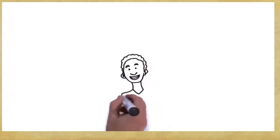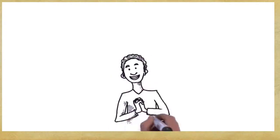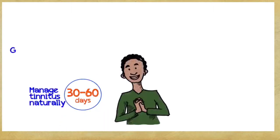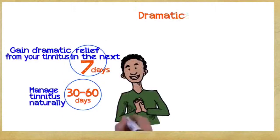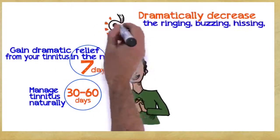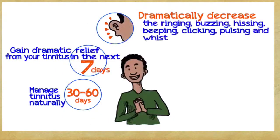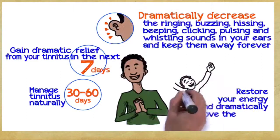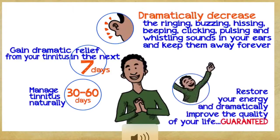So what can you gain if you embrace these three easy principles? You can manage tinnitus naturally within 30 to 60 days. Gain dramatic relief from your tinnitus within the next seven days. Dramatically decrease the ringing, buzzing, hissing, beeping, clicking, pulsing, and whistling sounds in your ears and keep them away forever. Restore your energy and dramatically improve the quality of your life, guaranteed.